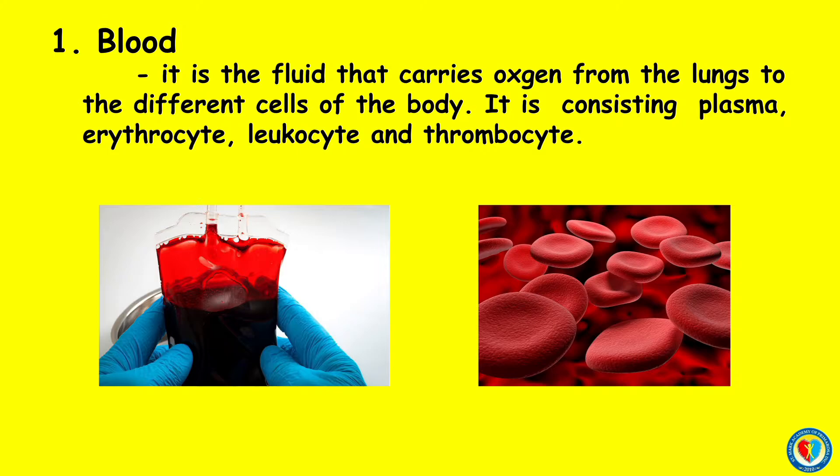Leukocytes are colorless cells that circulate in the body and body fluids and are involved in counteracting foreign substances and diseases. They are also known as white blood cells. Thrombocytes are tiny disc-shaped pieces of cells that are found in blood and spleen.